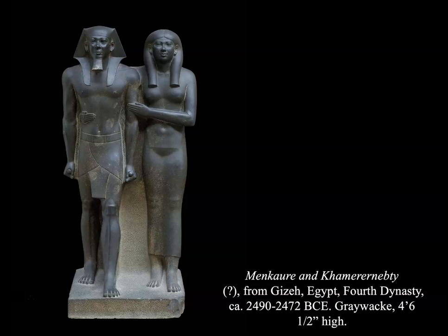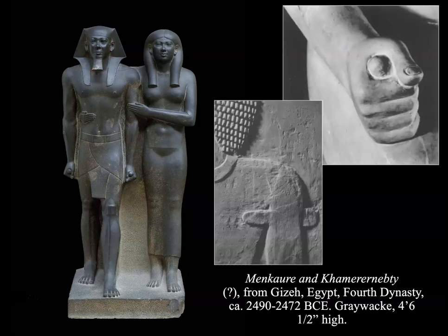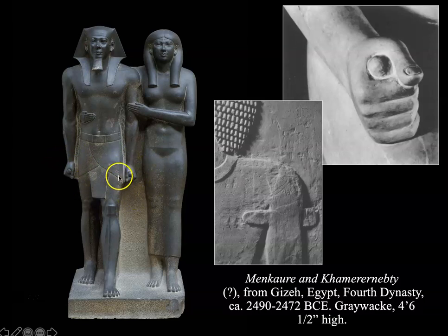This double portrait shows the figures' stance portraying marriage. It is a prime example of Old Kingdom royal tomb sculpture: the figures remain welded to a stone block, with a strictly frontal viewpoint conforming to rules and conventions. The block holds the sculptures together, one foot steps forward, and Menkaure holds small ritual scrolls of paper.